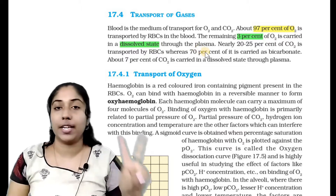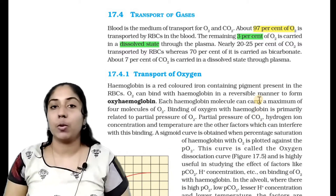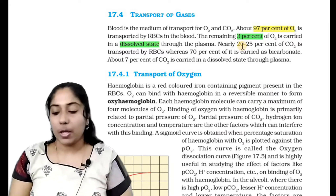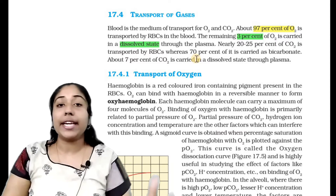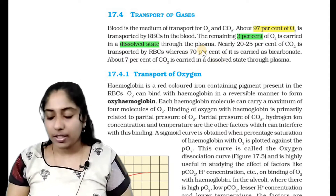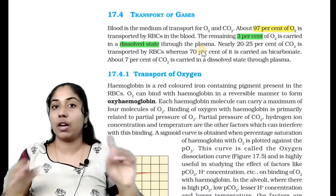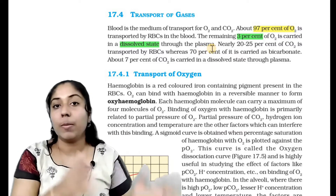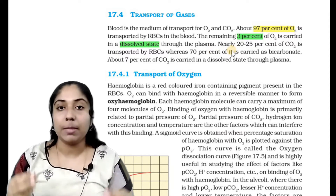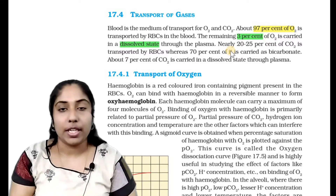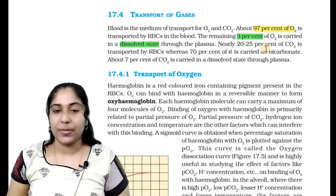Carbon dioxide is transported: 70% as bicarbonate ions, 22–25% by RBCs, and 7% in a dissolved state in plasma.